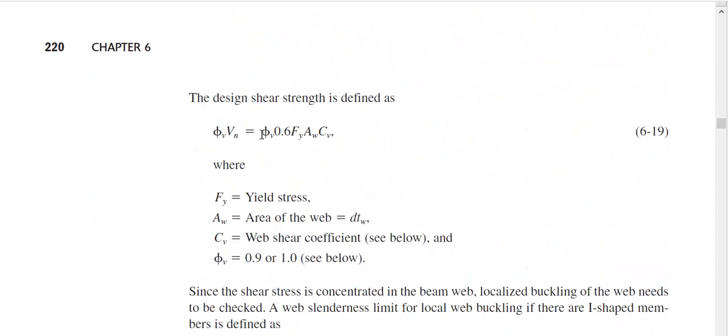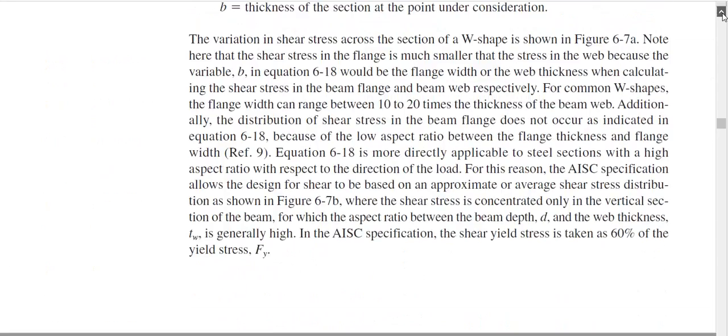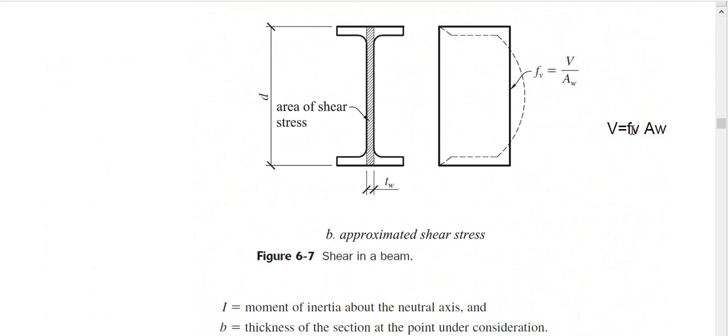We will see that on the next page of your book. You can see phi V, it is the strength reduction factor typically 0.9 or 1.0. We will discuss about it. And then what is 0.6 FY? 0.6 FY is your FV that means yield stress, allowable shear stress or allowable shear strength or yield stress in shear, whatever you call. That is simply the shear strength.